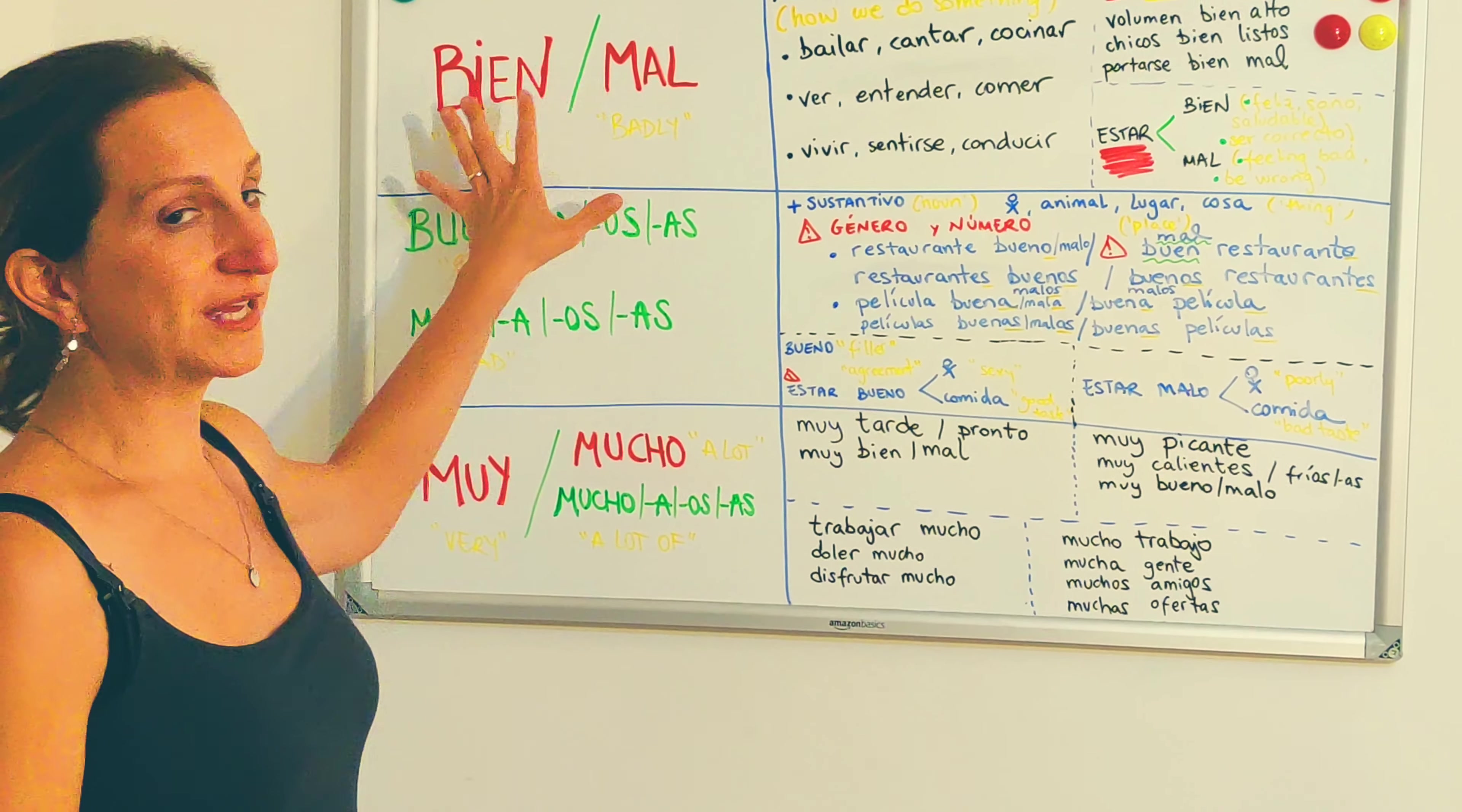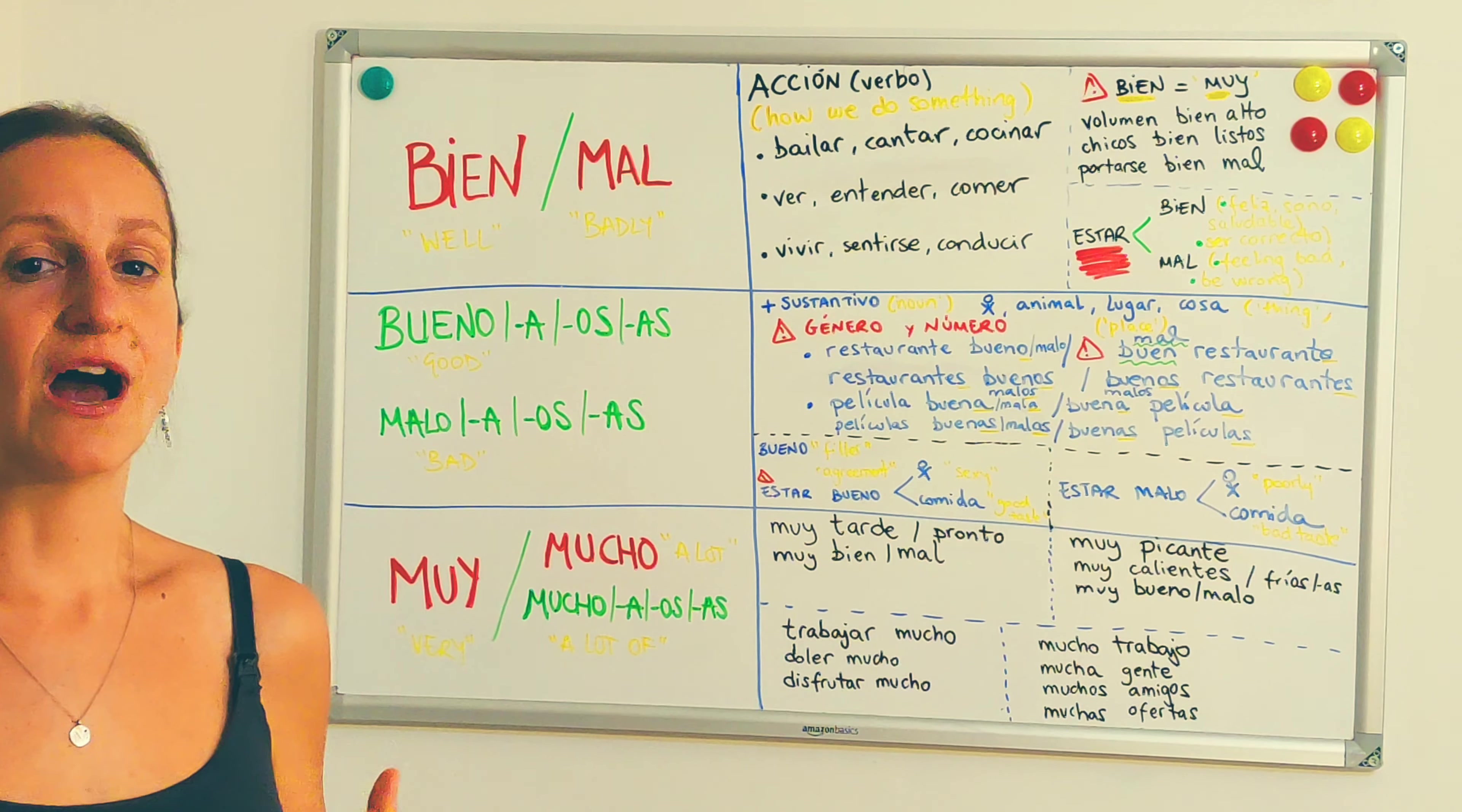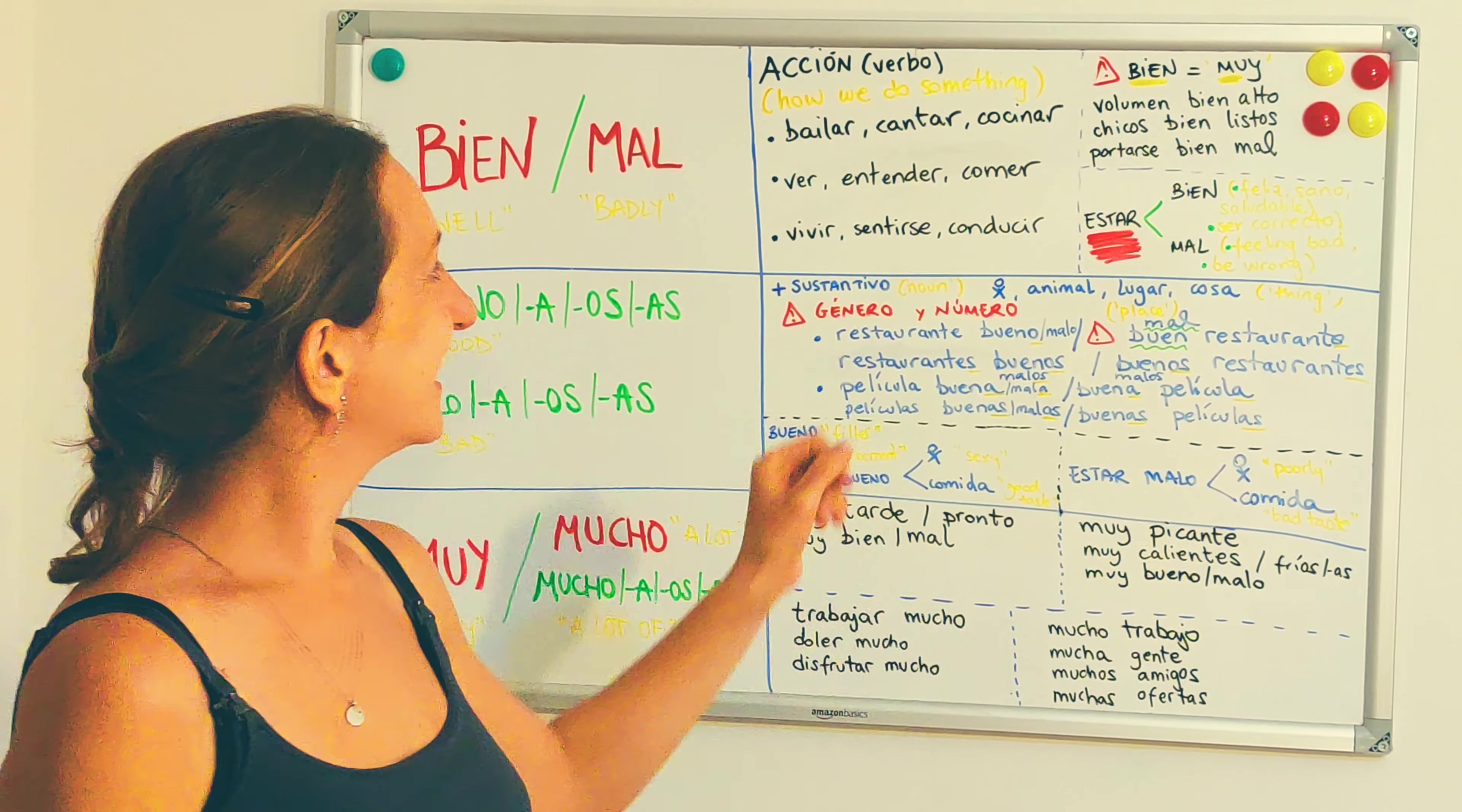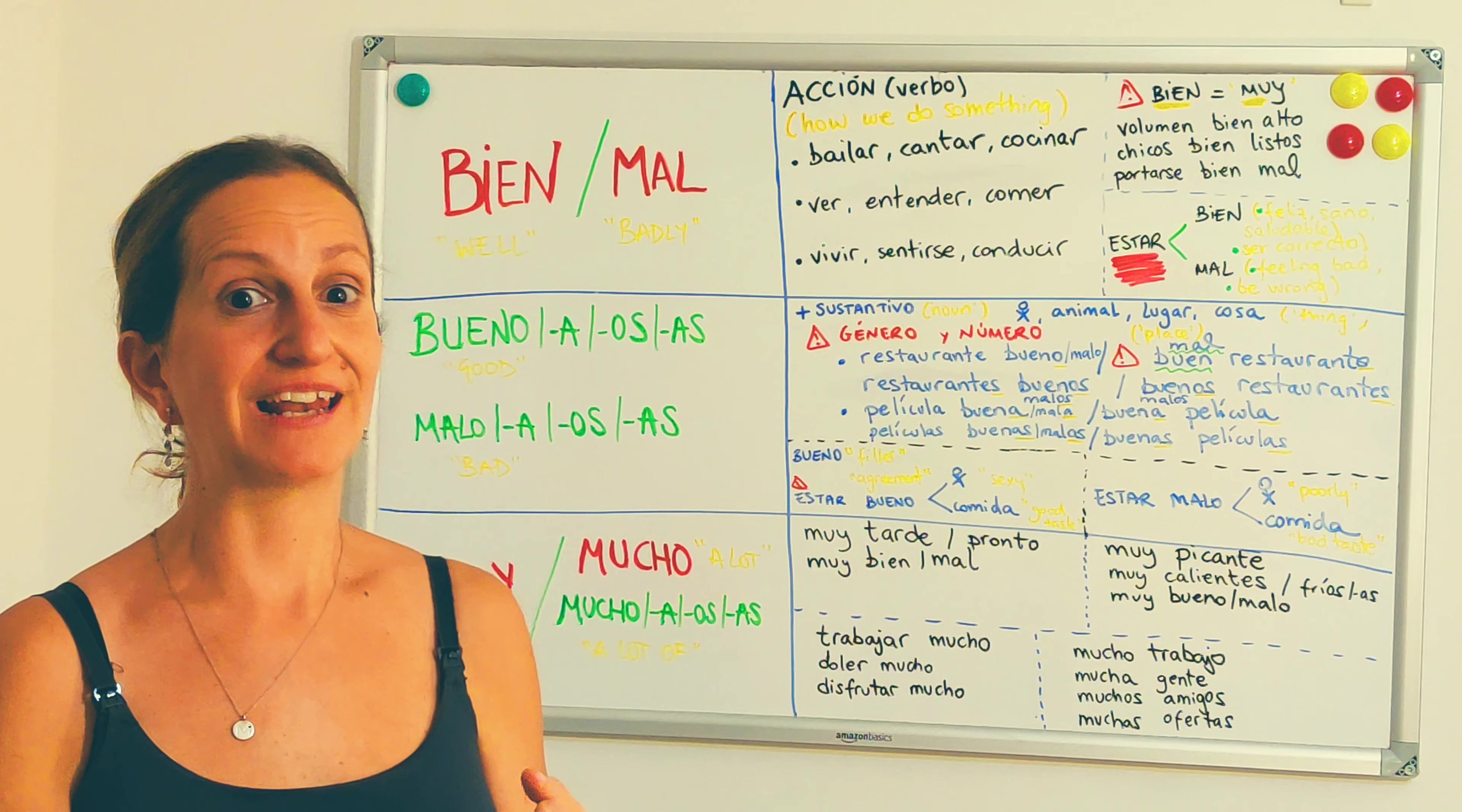So starting with bien and mal, bien is well, mal is badly. Both of them are adverbs and they describe actions, how we do something. No canto bien, pero bailo bien. Mi marido cocina muy bien. Tengo mucha suerte. Y hay muchas personas que conducen mal.